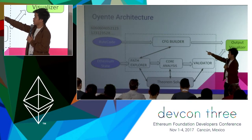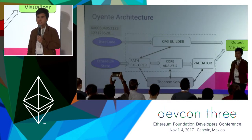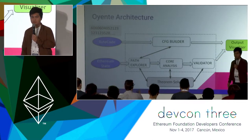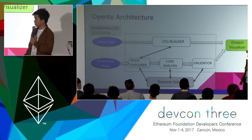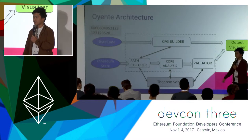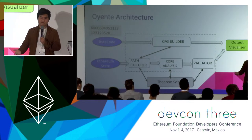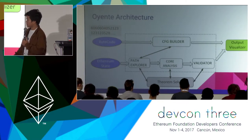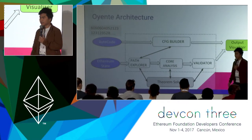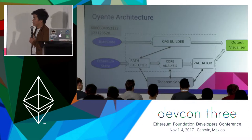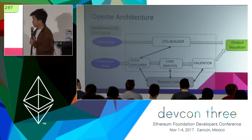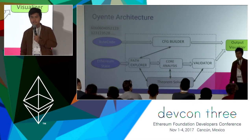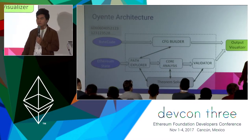For every path, we analyze to see whether some property is violated. Of course, we use the theorem solver to check that. And if Oriente flags any bug, there's a validator component to check whether the bug is a false positive or not.